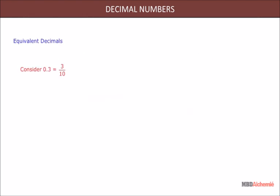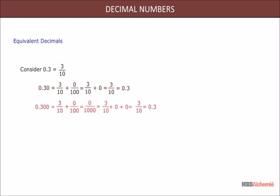Equivalent decimals. Consider 0.3 equals 3 divided by 10. 0.30 equals 3 upon 10 plus 0 upon 100 equals 3 upon 10 which equals 0.3. Similarly, 0.3 equals 0.300. Thus, we find that 0.3, 0.30, 0.300, etc. are equivalent decimals.